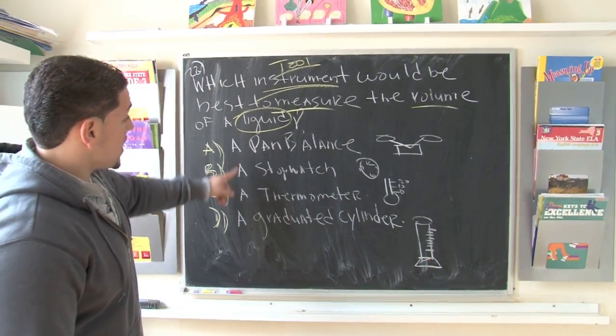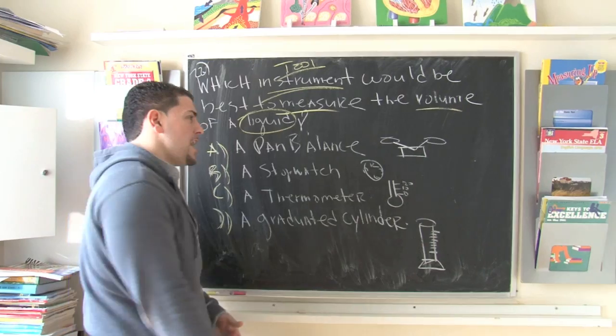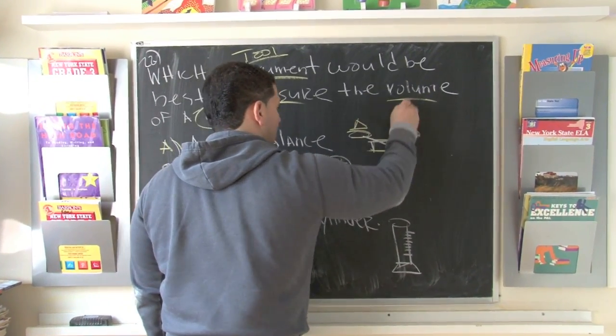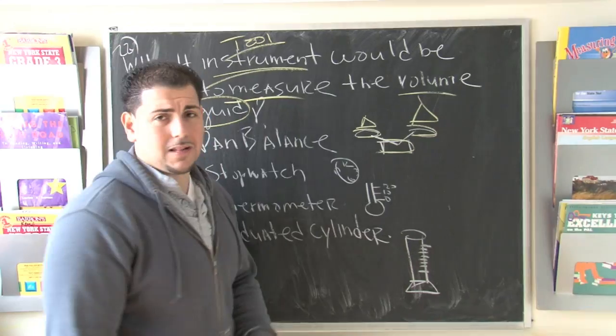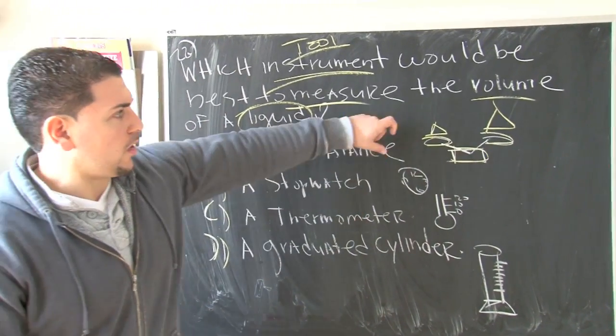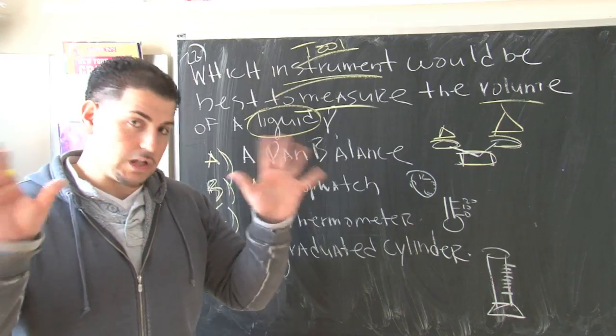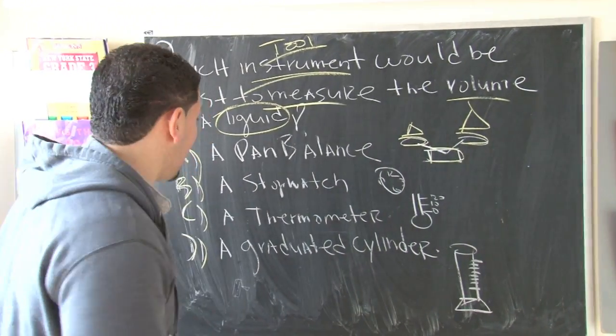Well let's look at the first choice. They give us a pan balance. Well a pan balance looks something like this. And basically what you do is you weigh the size of different objects. So when we're talking about liquid, the last thing we want to do is pour liquid on a pan balance. Where would the liquid go? All over the place. And then mom and dad would lose their mind. So would your teacher. Alright, so that's out.